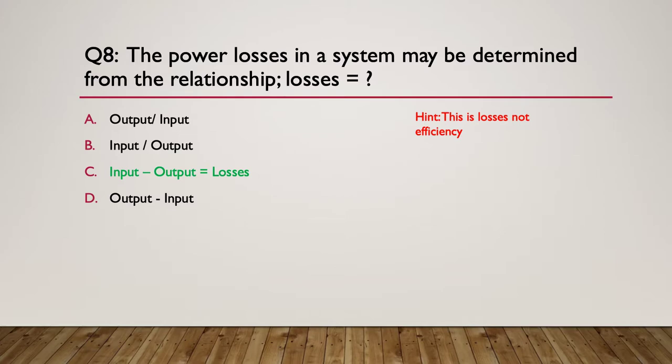And the answer is C. The losses are the input minus the output gives you the losses. Whatever you put into a system, for example. Let's say we input 10 kilowatts and we output 8 kilowatts. The losses are going to be 10 minus 8 equals, we have 2 kilowatts of losses.